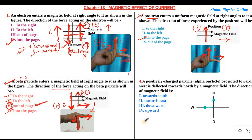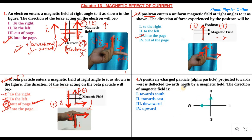I hope you are getting clear with this type of question. Let's solve the last one. The last question is a little different — it does not ask us to find the direction of the force acting, but rather the direction in which the magnetic field will be acting. A positively charged particle, that is the alpha particle, projected towards the west is deflected towards the north by a magnetic field. The direction of magnetic field is towards south, east, downwards, or upwards.